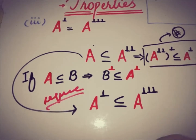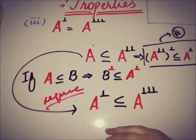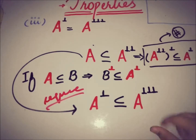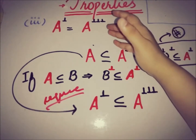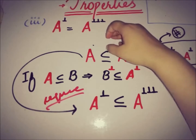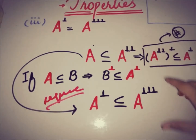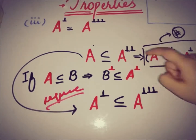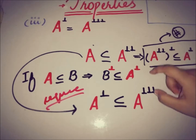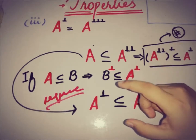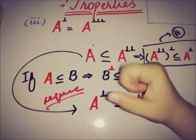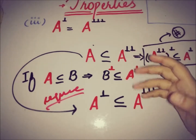By combining both subset relations, we can say that A annihilator is equal to A triple annihilator. We have proved this by using the first and second properties.